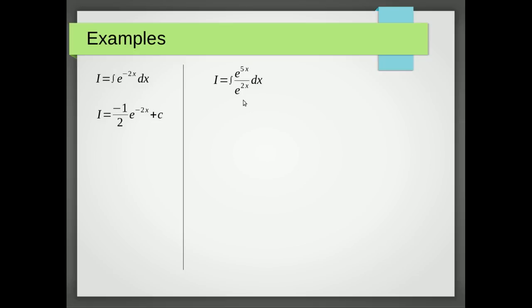Okay let's look at another example. Now this isn't in quite the right form but we need to change it into this form and fortunately e to the 5x divided by e to the 2x is e to the 3x so it's going to go to e to the 3x plus c but we're going to multiply by the reciprocal of 3 which is a third so we get a third e to the 3x plus c.